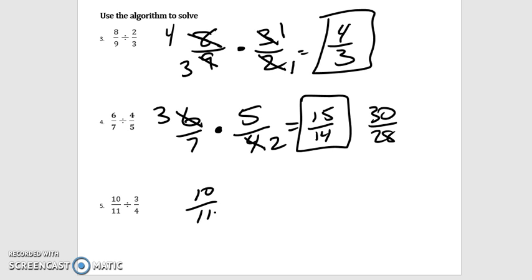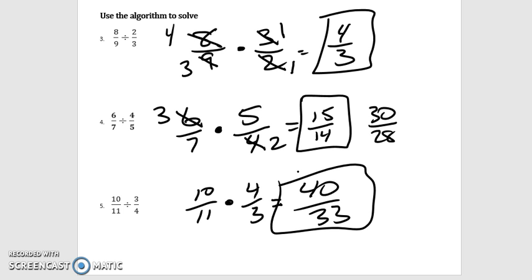All right. So last one here, 10 11ths. We leave the first fraction alone, change it to multiplication, and we flip that second one. I'm looking for cross division and a tear rolls across my cheek because there is none. Got to multiply across 40 33rds. There you go. Can't divide them by anything. So that's it, ladies and gentlemen. Show this to me to get your practice paper and you'll be on your way.